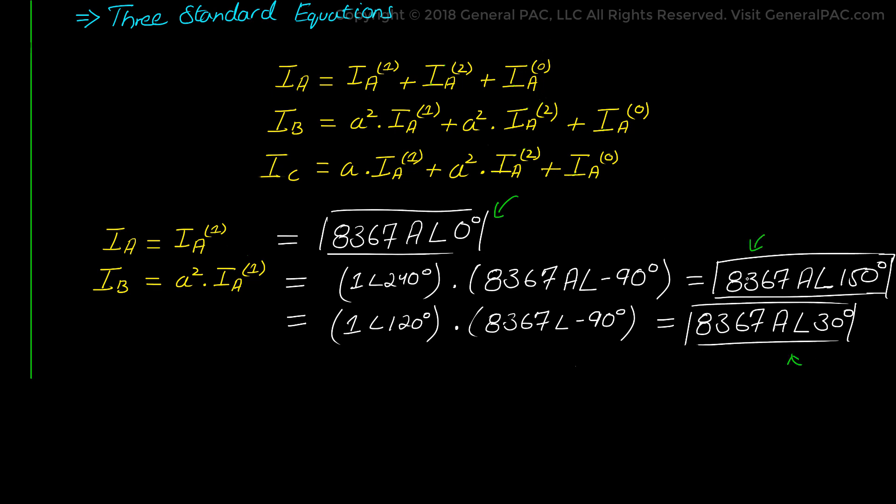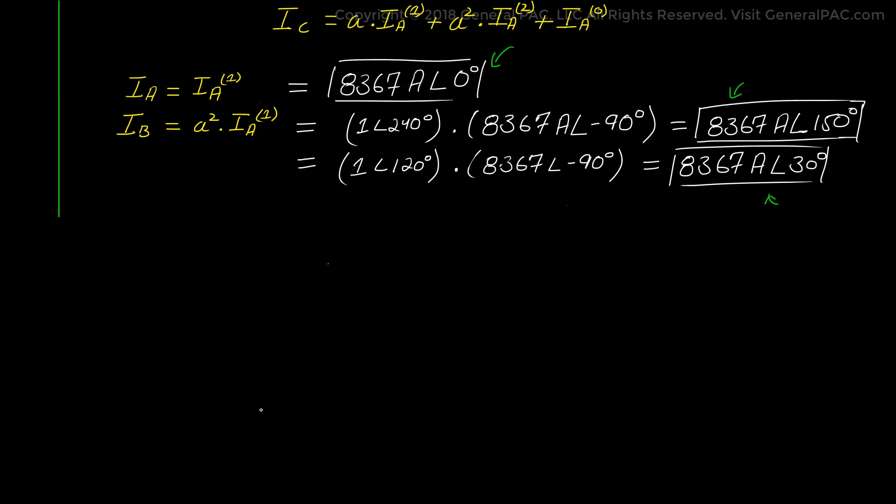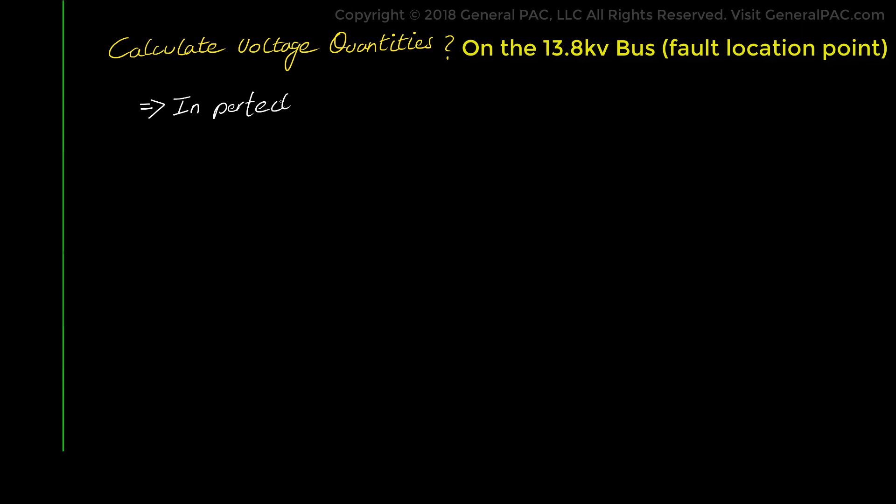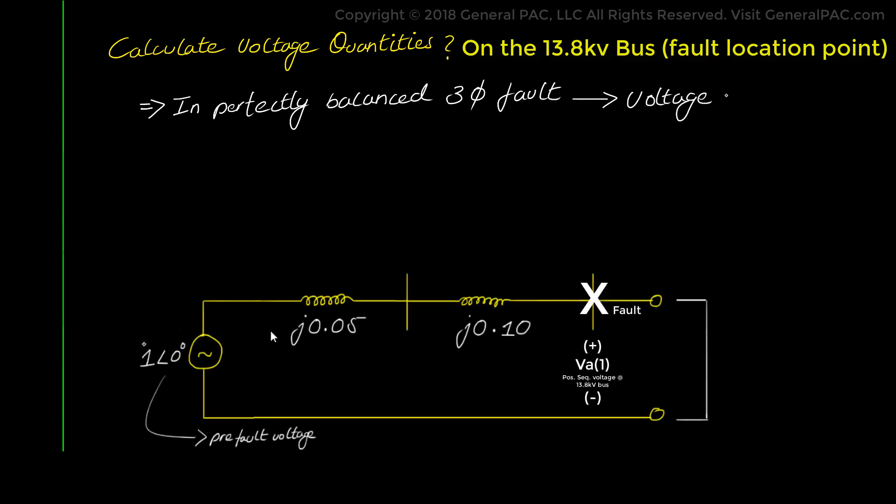Now if we wanted to calculate the voltage quantities how would we do that? Well it's very simple and it takes the same form as the six steps. But we will summarize it very quickly below. To calculate the three phase voltage quantities is not very exciting for a perfectly balanced three phase fault because we know that at the point of the fault on the 13.8 kV bus we should expect zero quantities for phase A, B, and C voltage quantities. And so here's how it works mathematically.